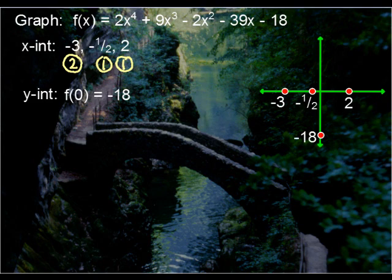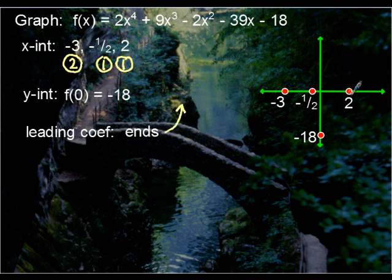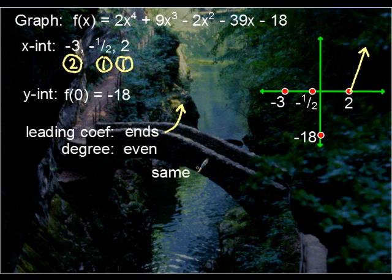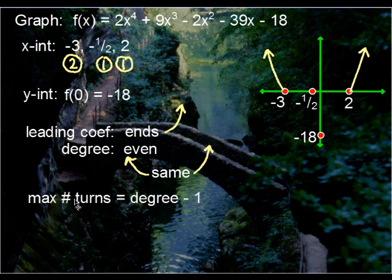And now, let's worry about the end behaviors. Leading coefficient is our next concern. In this case, you'll notice that it is two. In other words, it's positive, which means in the end, and I mean on the right side, it's going to end going upward. The degree you'll notice is four, which means that it's even. Therefore, it's going to be the same in that since we're ending upward, in the beginning, it's also going to be upward. Recall that the maximum number of turns that this graph will have will be the degree minus one. That's four minus one, which is three. So, we'll have three turns.